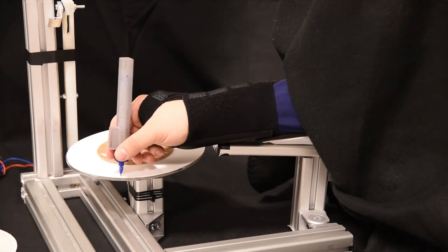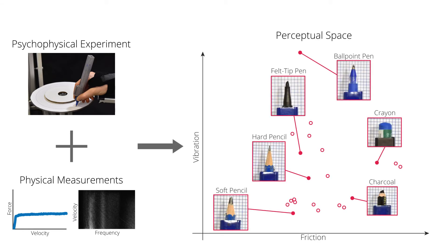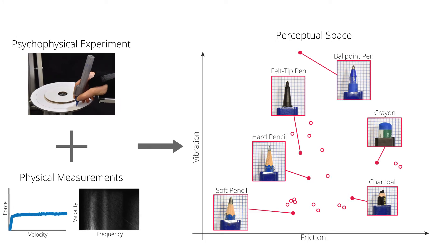The psychophysical study and measured data are input to our custom likelihood maximization algorithm that optimizes for a space that explains the psychophysical experiment and correlates well with measured physical properties.